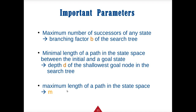We track three variables for complexity. B is the maximum number of successor states — the branching factor. For a maze, that's at most four. D is the depth of the shallowest goal — the minimum path length between the initial and goal state, which we want to minimize. M is the maximum path length in the state space. These three factors determine complexity based on which algorithm you use.